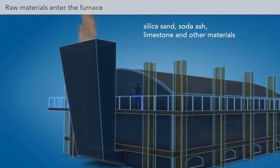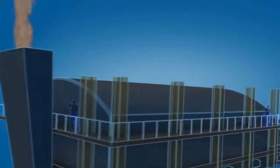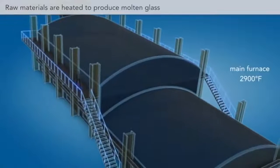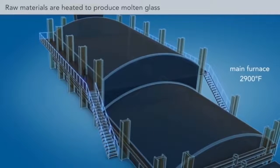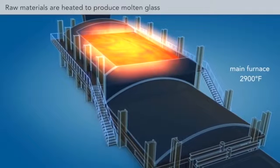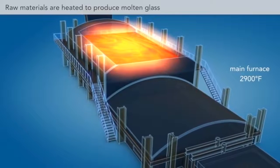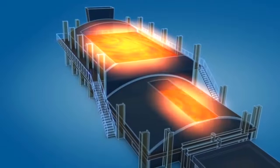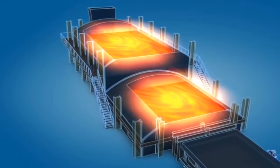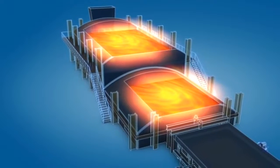Float glass is made by pouring the molten or liquid glass from a furnace into a chamber that contains a bed of liquid tin. So you are pouring one liquid onto another liquid. Let's see what happens.